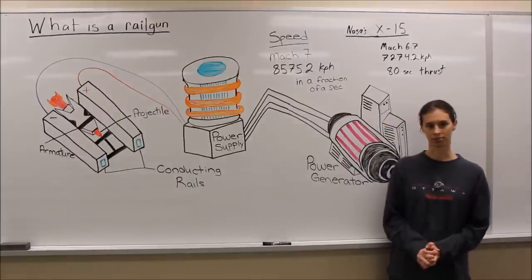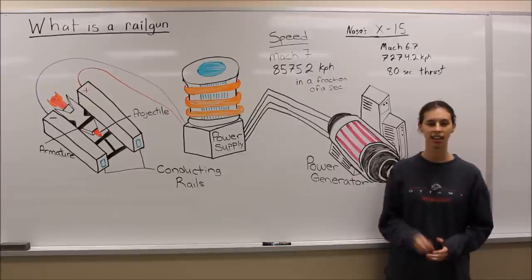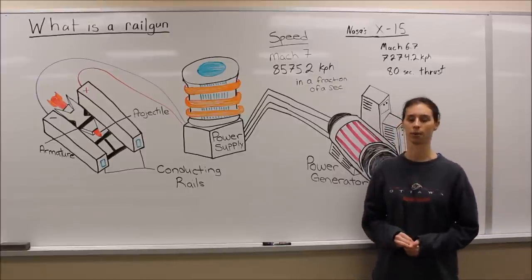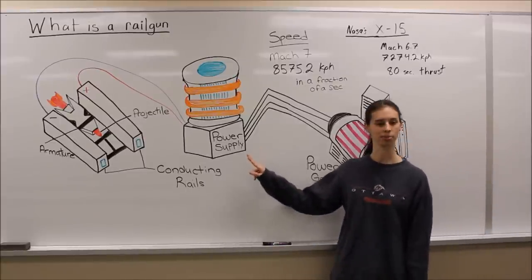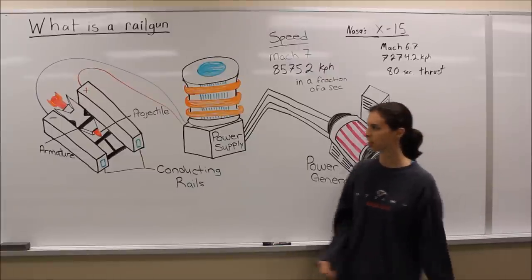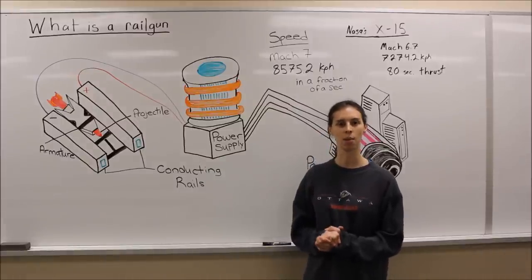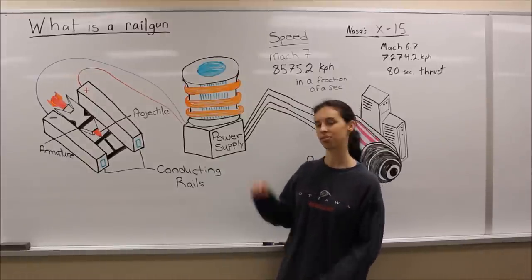What is a rail gun? It is a large electric current and needs three parts for it to work. It needs a power supply, which is a source of electric current. It needs two parallel rails, which are made out of conductive copper and can be a length of 30 feet.